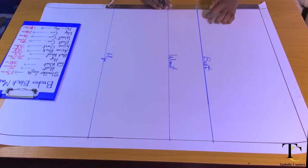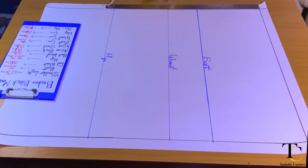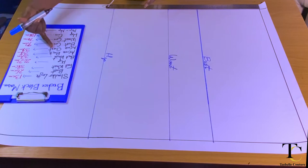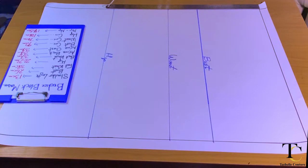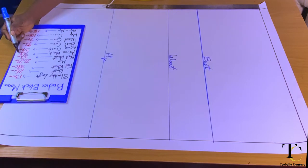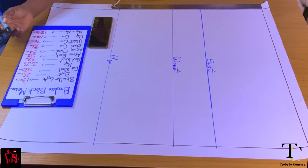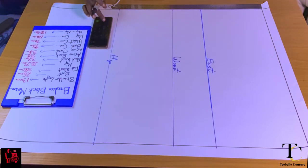The next thing is to calculate my chest line or armhole line measurement. This is where my across back and across chest come in. Some people use bust divided by six plus some centimeters, or armhole divided by two, but I use my across chest for the front and my across back for the back. Both my across chest and across back are 39 centimeters, so I'm going to divide 39 by two, giving me 19.5 centimeters.